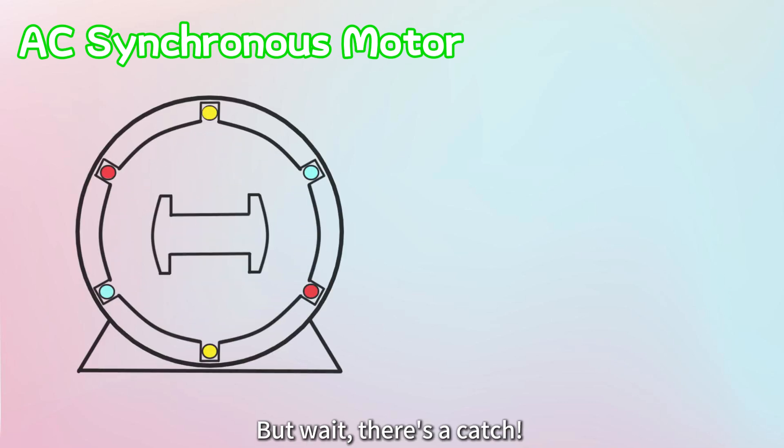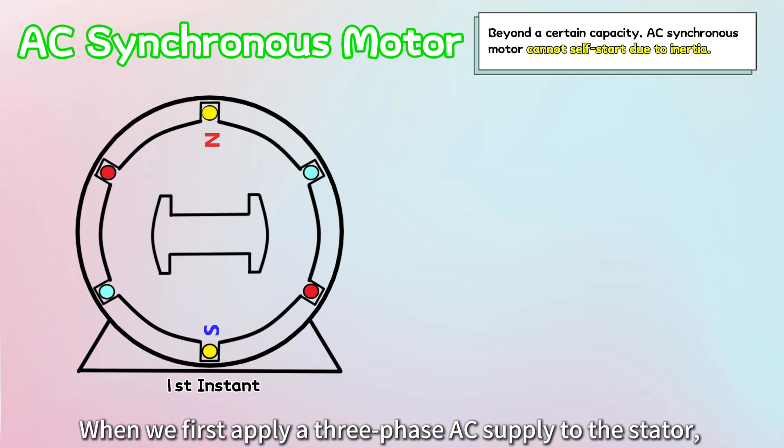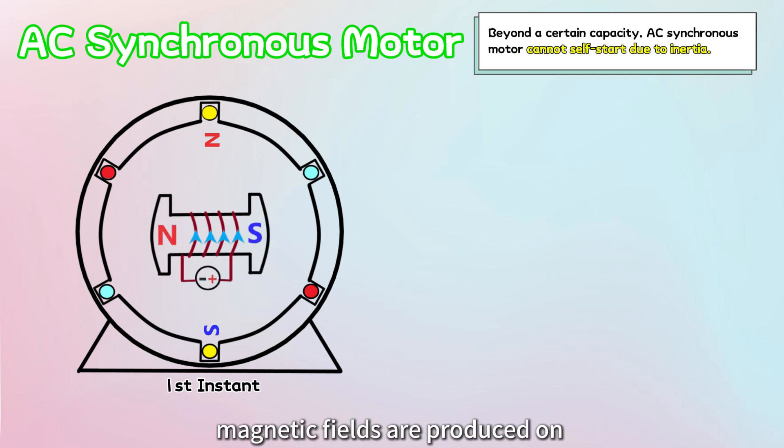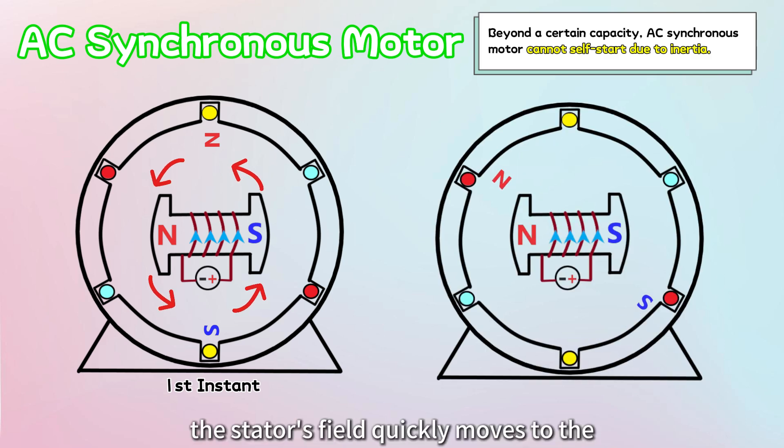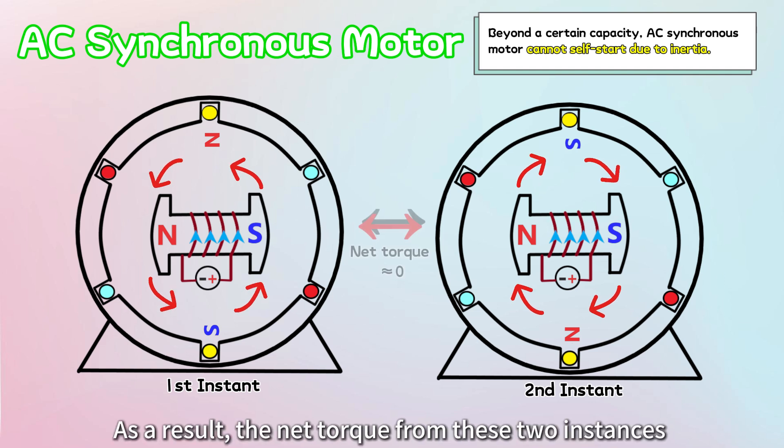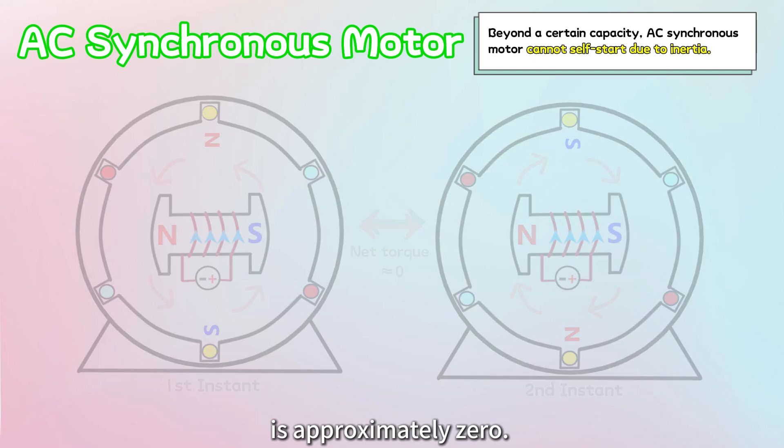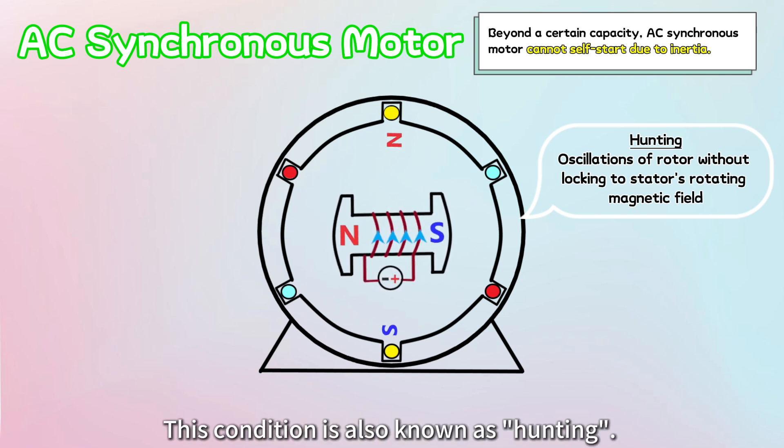But wait, there's a catch. Beyond a certain capacity or size, a synchronous motor cannot self-start due to the rotor's inertia, which tends to keep it stationary during startup. Let's assume the rotor starts at a horizontal position, and visualize this with two instances. When we first apply a three-phase AC supply to the stator and a DC supply to the rotor, magnetic fields are produced on both the stator and rotor. Initially, due to the attractive and repulsive forces between the poles, the torque will tend to move the rotor in an anticlockwise direction. But because of the rotor's inertia and the high speed of the stator's rotating magnetic field, the stator's field quickly moves to the other half cycle, while the rotor remains almost in the same position. In this second moment, the torque will be in the clockwise direction. As a result, the net torque from these two instances is approximately zero. This process repeats, causing the rotor to oscillate back and forth, without locking onto the stator's rotating magnetic field. This condition is also known as hunting.